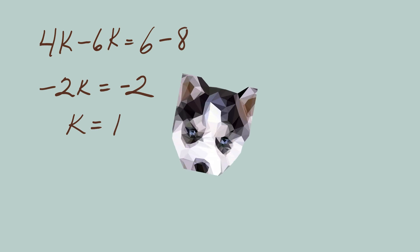4K minus 6K equals 6 minus 8. Negative 2K equals negative 2. Divide both sides by negative 2. K equals 1. Key is one year old. Aww, little husky puppy.